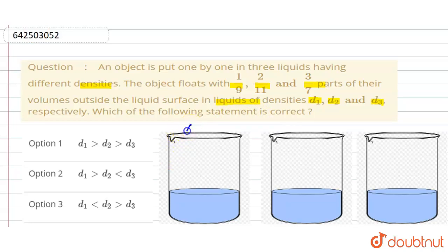Now consider this is container A, and this is container B, and this is container C. And the object floats with 1/9, 2/11, and 3/7 parts of their volumes outside the surface in liquids of densities—